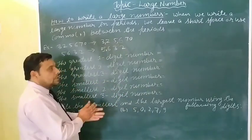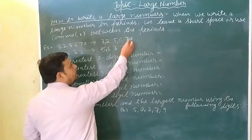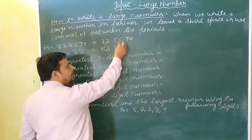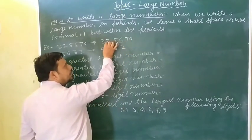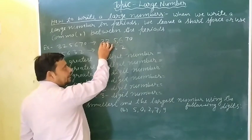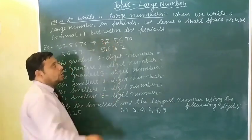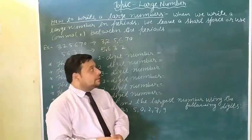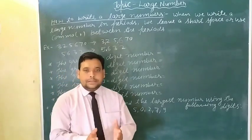How to read questions? One, ten, hundred, thousand, ten thousand, lakh. Three lakh, twenty-five thousand, six hundred, seventy.